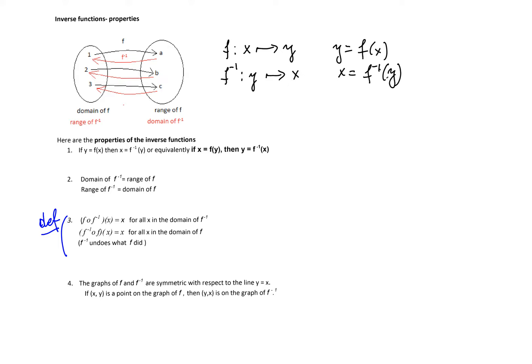It doesn't matter whether I start on the left or the right. If I start with b and apply f inverse I will end up at 2, and now if I apply f to that 2 I will get b. So property 3 is not only definition but clearly indicates that relationship between f and f inverse. f inverse undoes what function f do.